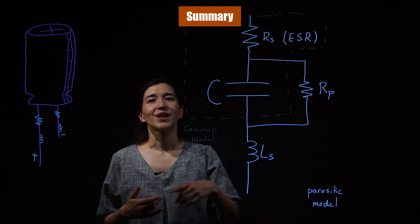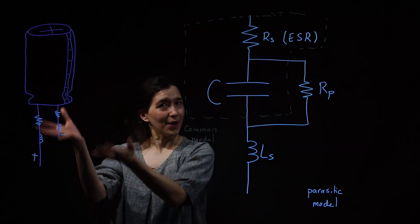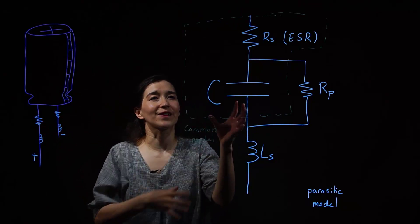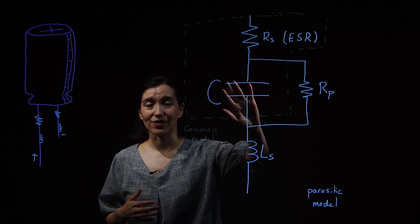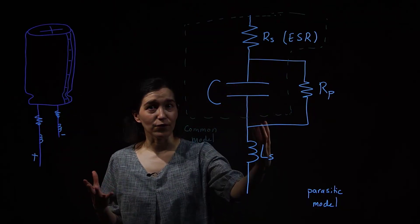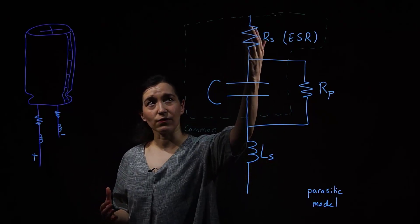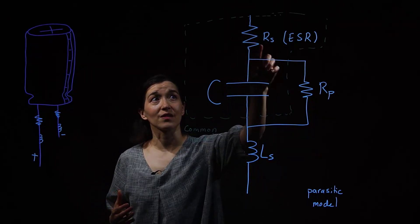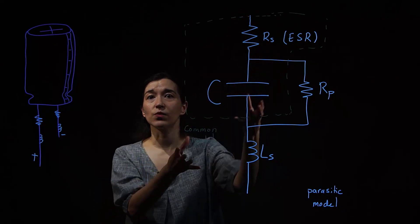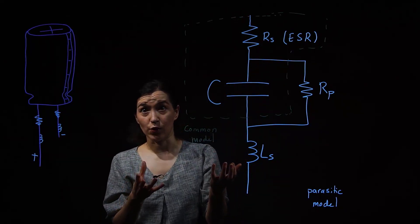In summary, we have a real capacitor. When we want to model that, we have to go beyond the ideal capacitor model and add a few more components. We need to take account for the equivalent series resistance, the ESR, here. And that's commonly used in a model for DC-DC converters.